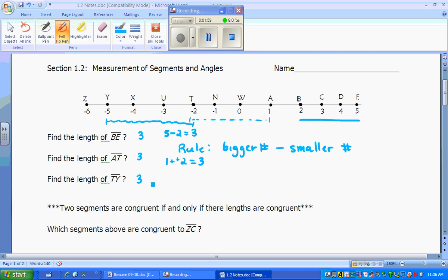And last but not least, TY, you have a negative 2, which is the bigger number, minus a negative 5. Click, click once again, and you get 3. So the rule that you need to remember to find the length of a number on a number line is the bigger number subtract the smaller number.